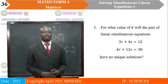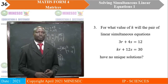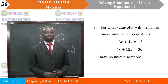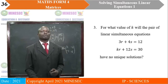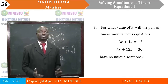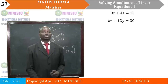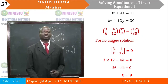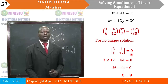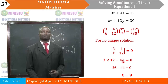For what value of k will the pair of simultaneous equations have no unique solution? As we said, the matrix of coefficients must have determinant 0. First, form the matrix equation. For no unique solution, the determinant of this matrix, obtained from the coefficients, should equal 0. The determinant is 12 times 3 minus k times 4 = 36 - 4k, equal to 0. When we solve for k, we get k = 9.